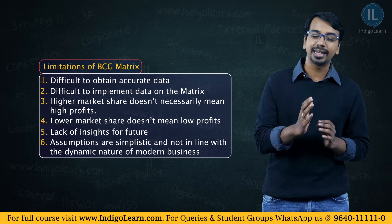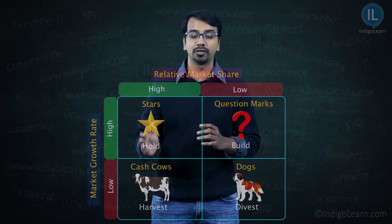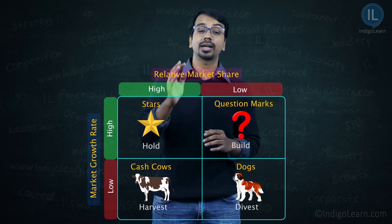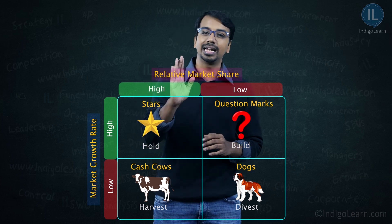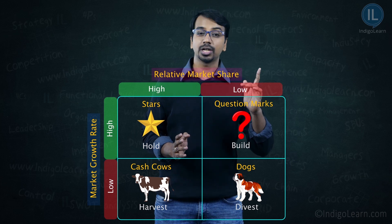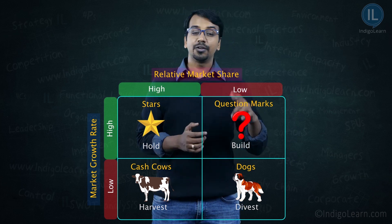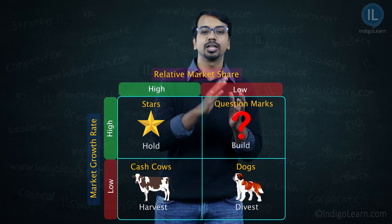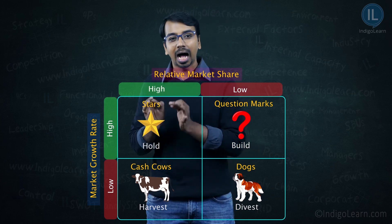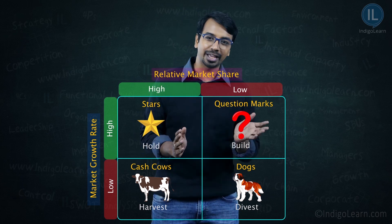To quickly summarize: we have growth rate on the vertical axis and market share on the horizontal axis. High growth rate and high relative market share makes it a star. Low growth rate and high relative market share makes it a cash cow. High growth rate and low market share makes it a question mark or problem child. And low market share in a low growth market makes it a dog. For each category, the corresponding strategy is: if it is a question mark, build it and convert it into a star; if it is a star, hold it and preserve it; if it is a cash cow, harvest it; and if it is a dog, divest it.